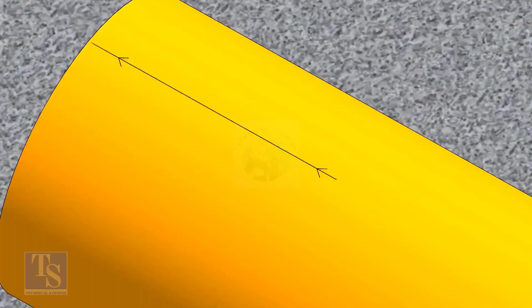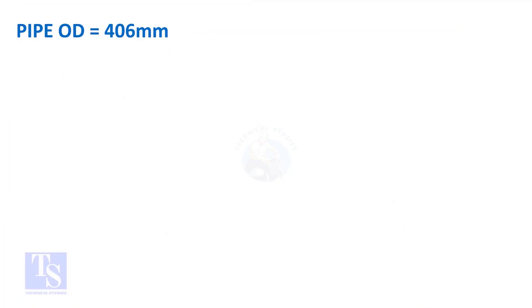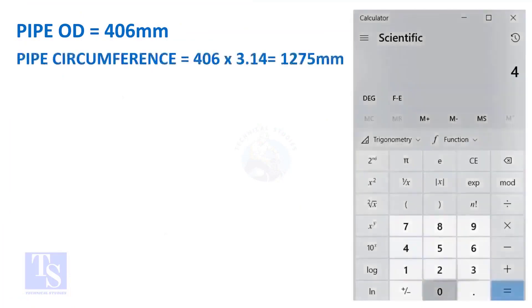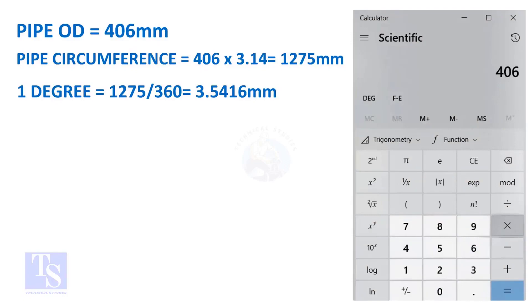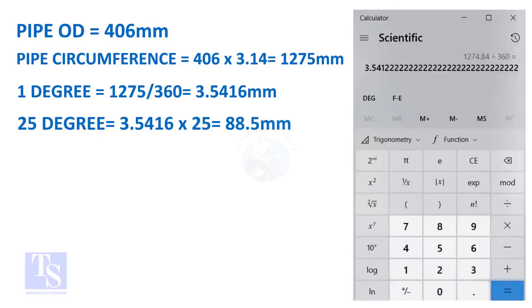Let us calculate the circumferential distance or arc length for 25 degrees. Multiply the OD by 3.14. You will get the circumference of the pipe. Divide the circumference by 360, you will get the arc length of 1 degree. And finally, multiply the 1 degree arc length by 25. Now you have the arc length of 25 degrees. You can apply this formula to get the arc length of any degree.